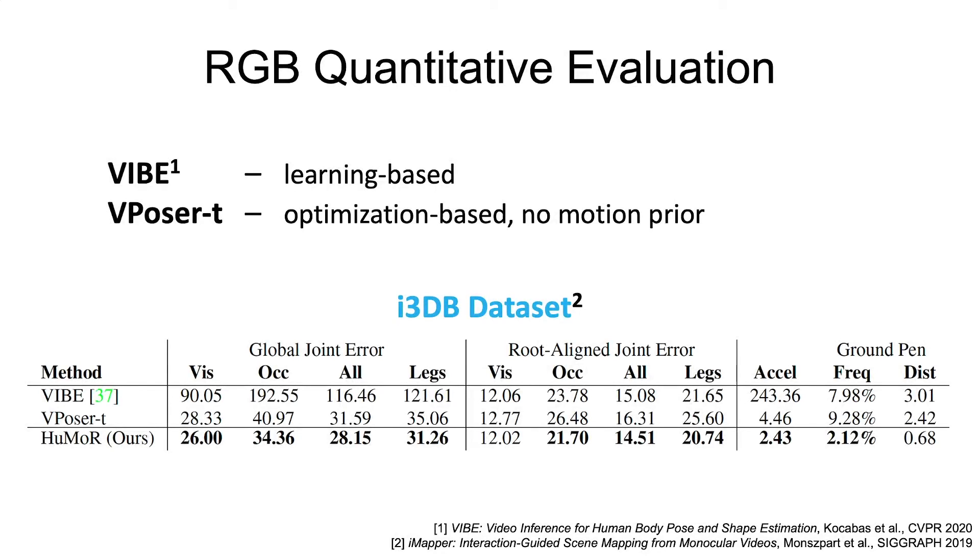Quantitatively, we compare our approach to VIBE, a recent learning-based method, along with an optimization-based baseline that encourages smoothness over time instead of using Humor as a motion prior. VIBE gives locally accurate results, but is globally inconsistent as indicated by large global joint errors and accelerations.